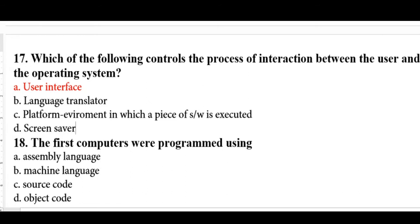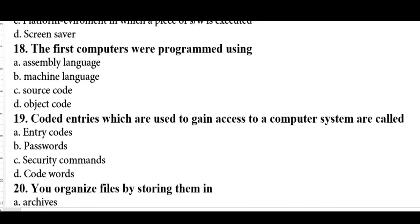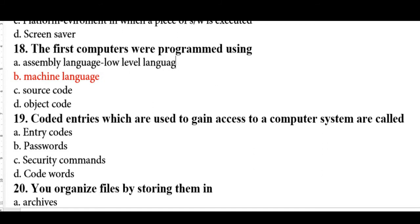The first computers were programmed using machine language — this is very important and can confuse people. Assembly language is a low-level language. Machine language is a high-level language in classification terms.